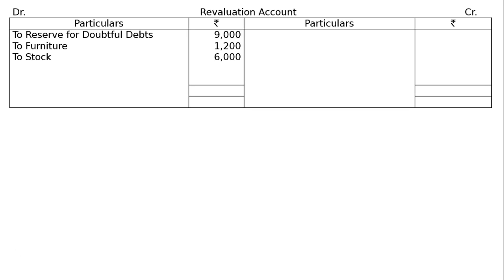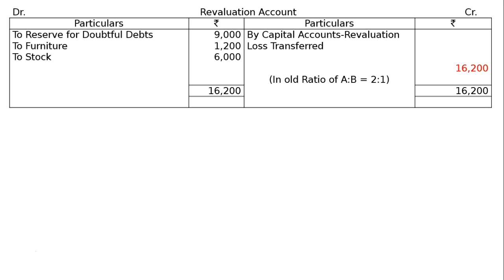We have everything on the debit side of the revaluation account, hence we have a loss. The total is rupees 16,200, taken to the credit side, making the difference rupees 16,200. This revaluation loss is shared by capital accounts in the old ratio of A to B, that is 2 to 1. A gets rupees 16,200 multiplied by 2 by 3, equal to rupees 10,800, and B gets rupees 16,200 multiplied by 1 by 3, equal to rupees 5,400.